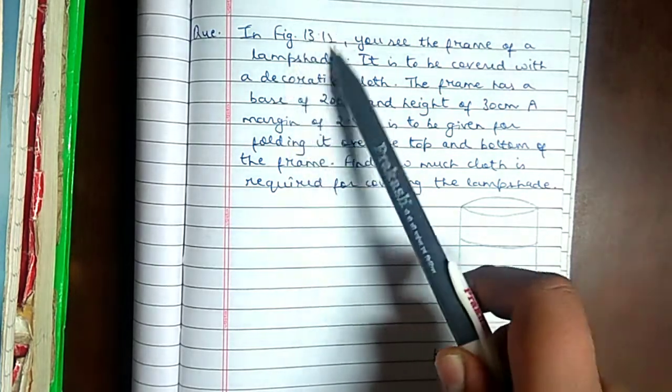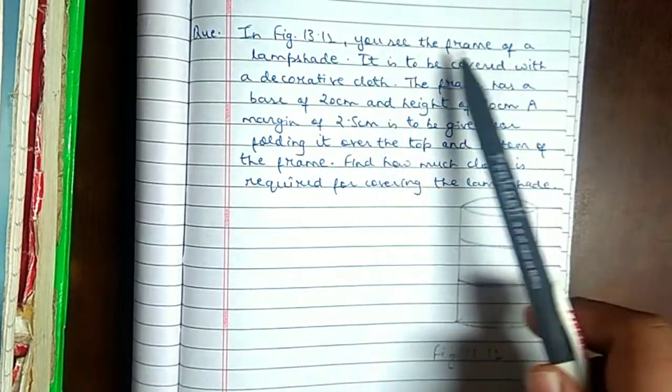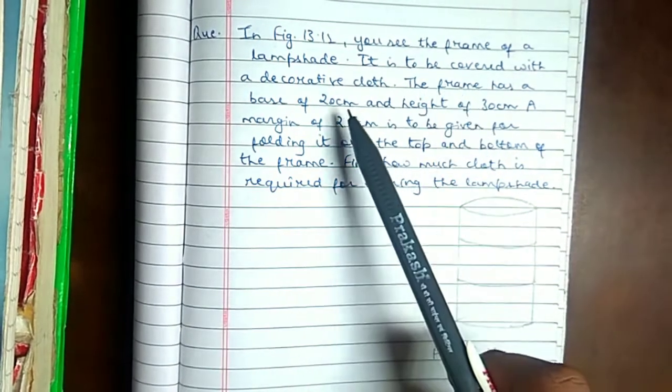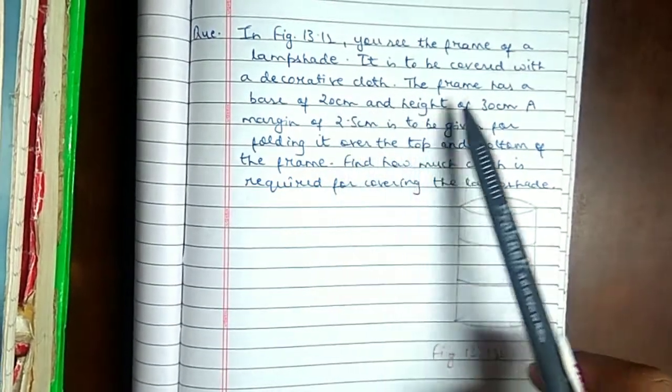In figure 13.12, you see the frame of a lampshade. It is to be covered with a decorative cloth. The frame has a base of 20 cm and height of 30 cm.